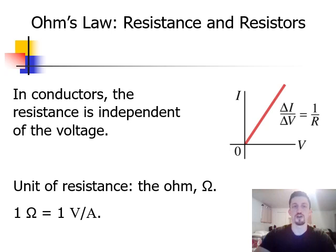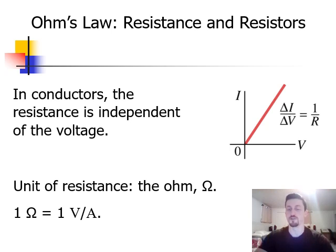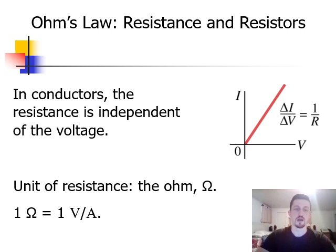Looking a little more at Ohm's Law: in conductors, the resistance is independent of the voltage. So if you're plugging a certain light bulb into your circuit, no matter what voltage you're running through it — whether you use a weaker or stronger power source — the resistance of that light bulb is going to be the same. You can also see on the right a graph of the relationship between voltage and current, which shows what it looks like graphically. And finally, the unit that we use for resistance is the Ohm, which is the capital Greek letter Omega. One Ohm is equal to one volt divided by one amp. So we have to have all our units in base units before we plug anything into an equation.